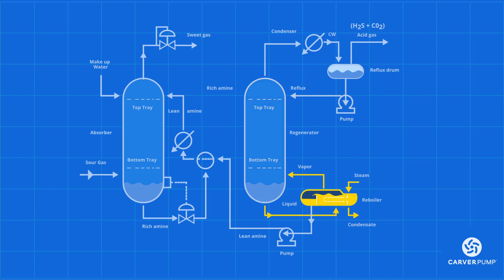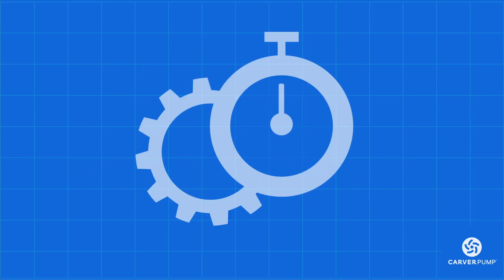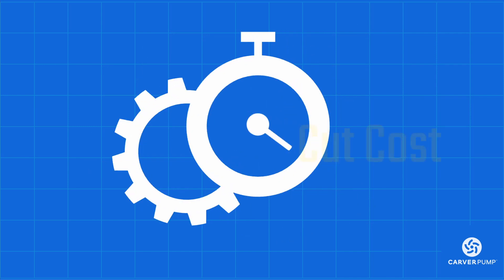The rich amine fluid at the bottom of the stripper column makes its way into a reboiler, where the liquid is heated up, releasing any acid gases in the solution and converting the rich amines into lean amines. The lean amines are then pumped back into the absorption column, where the cycle of gas sweetening begins once again, while the vapor from the reboiler re-enters the stripper column, rises to the top, passes through the condenser, and is finally discharged.